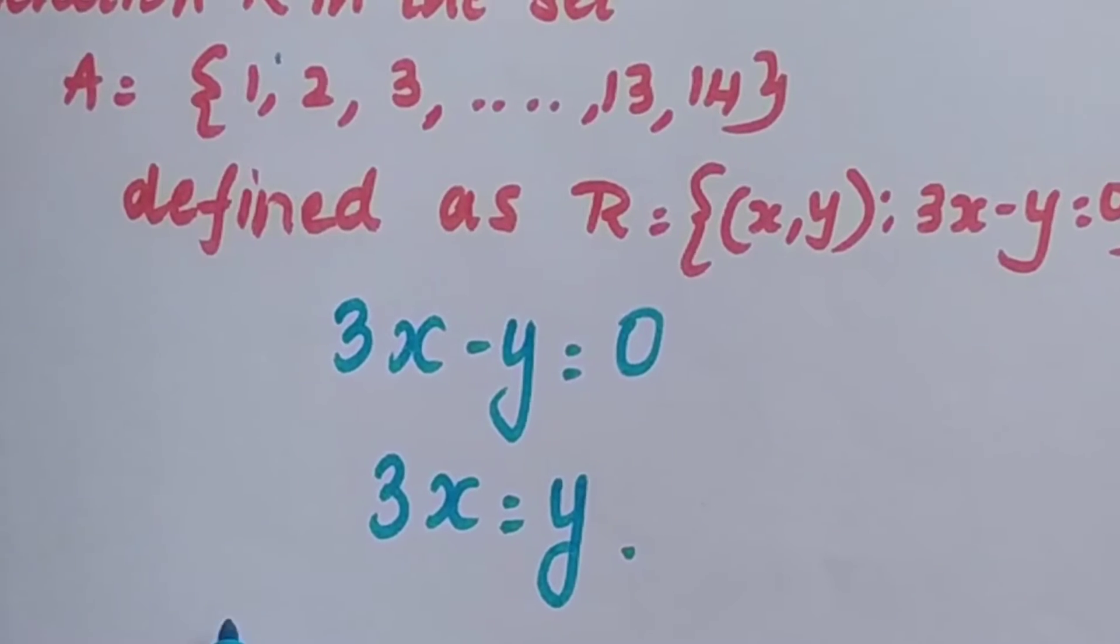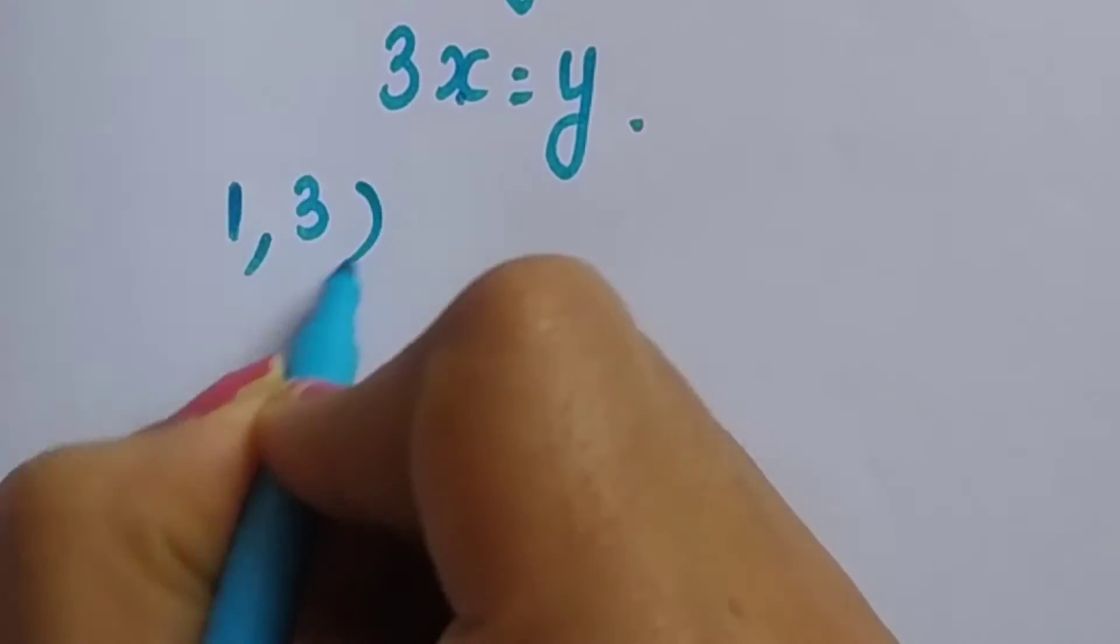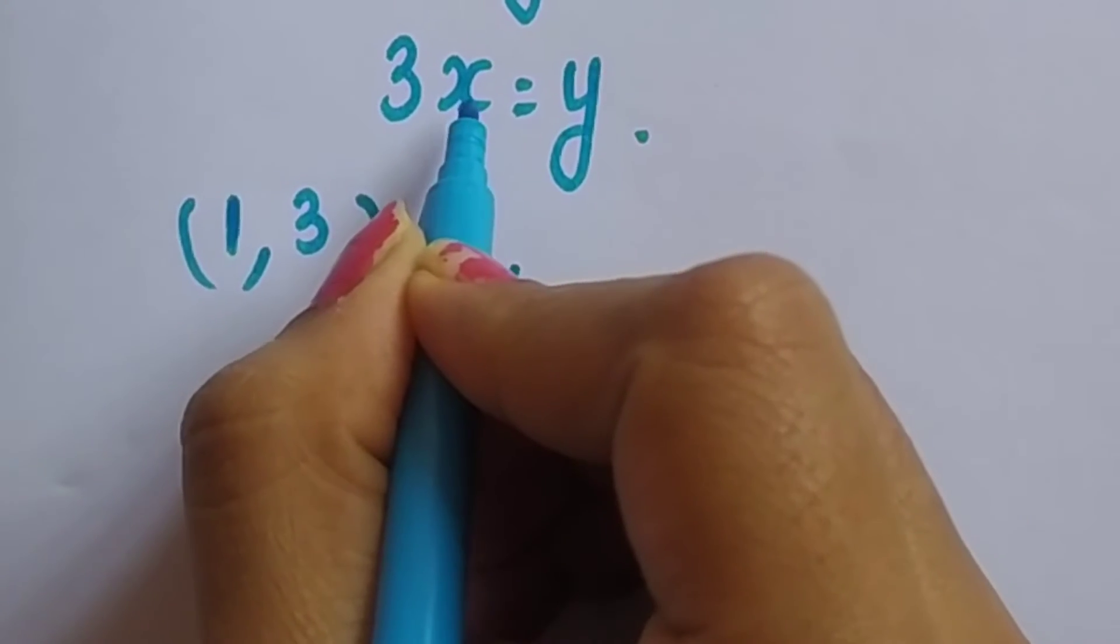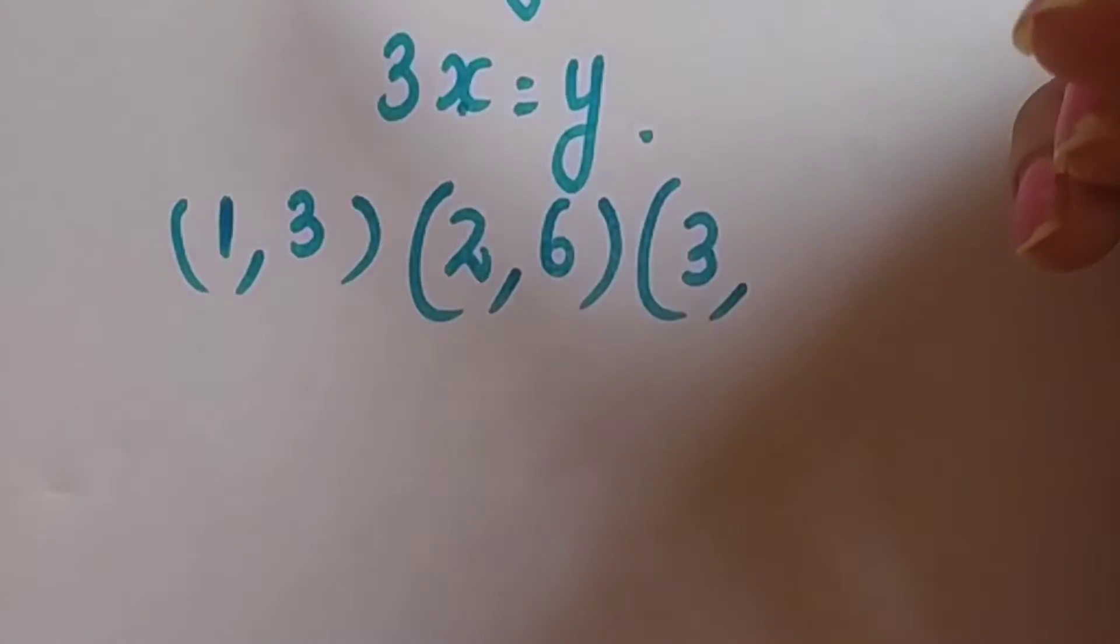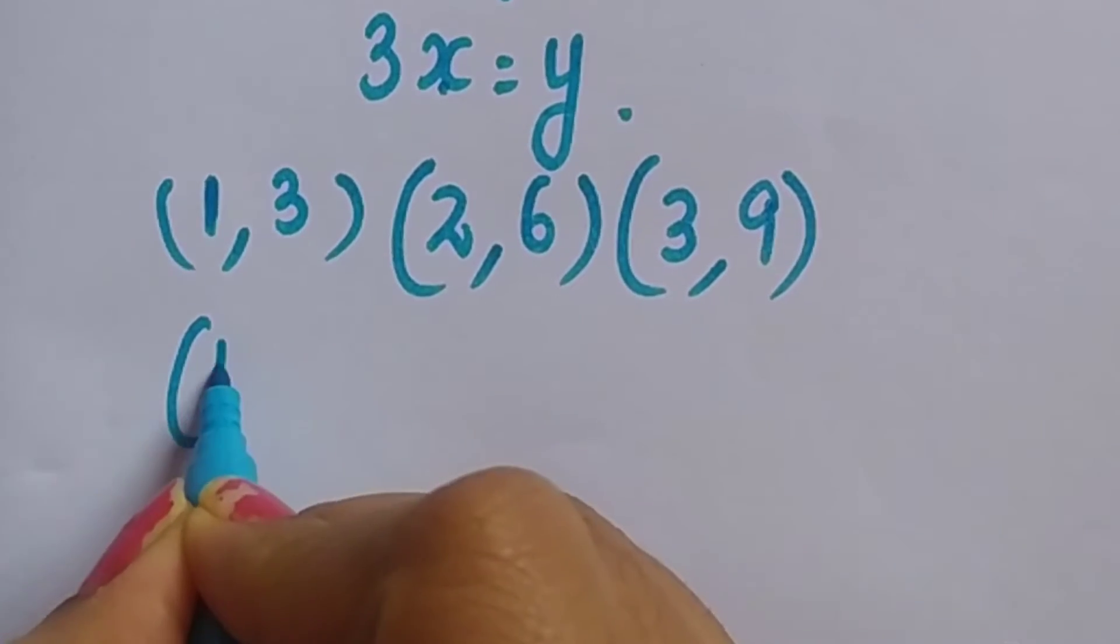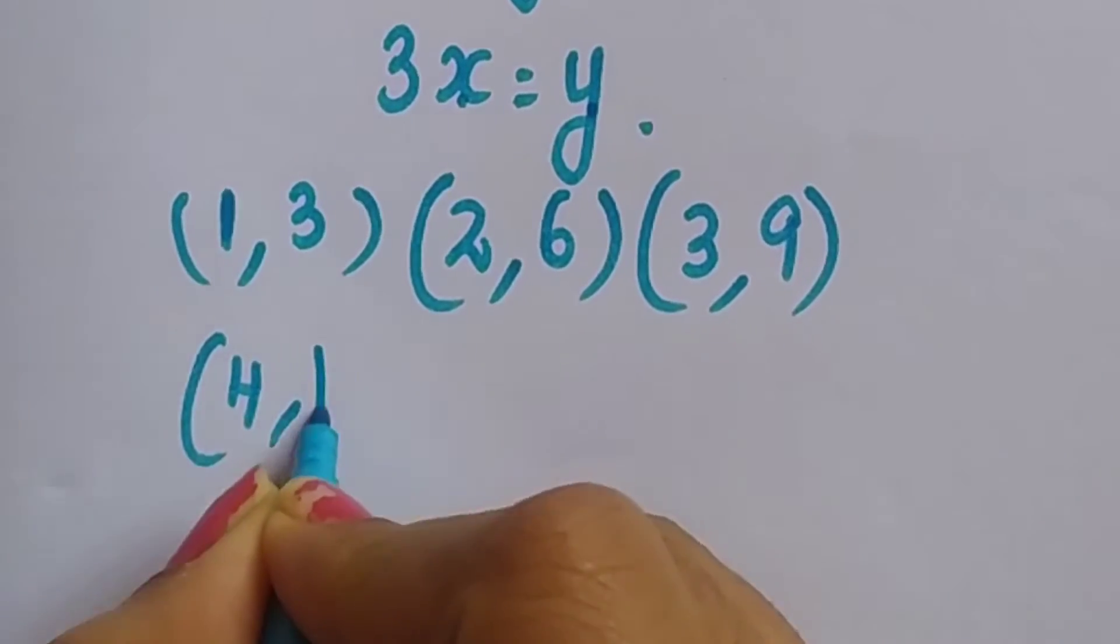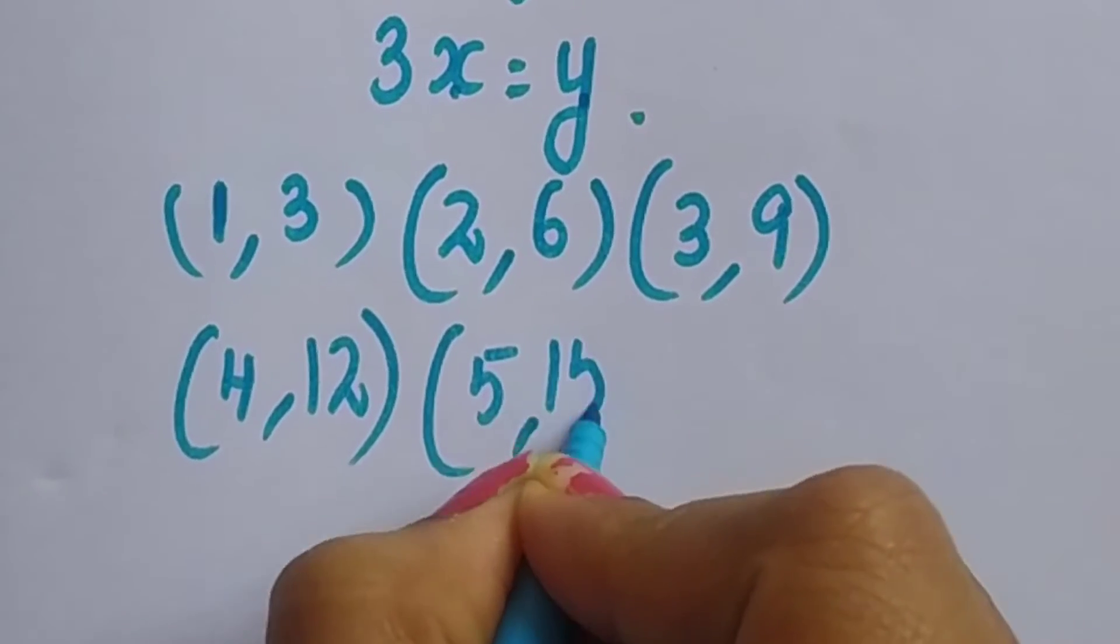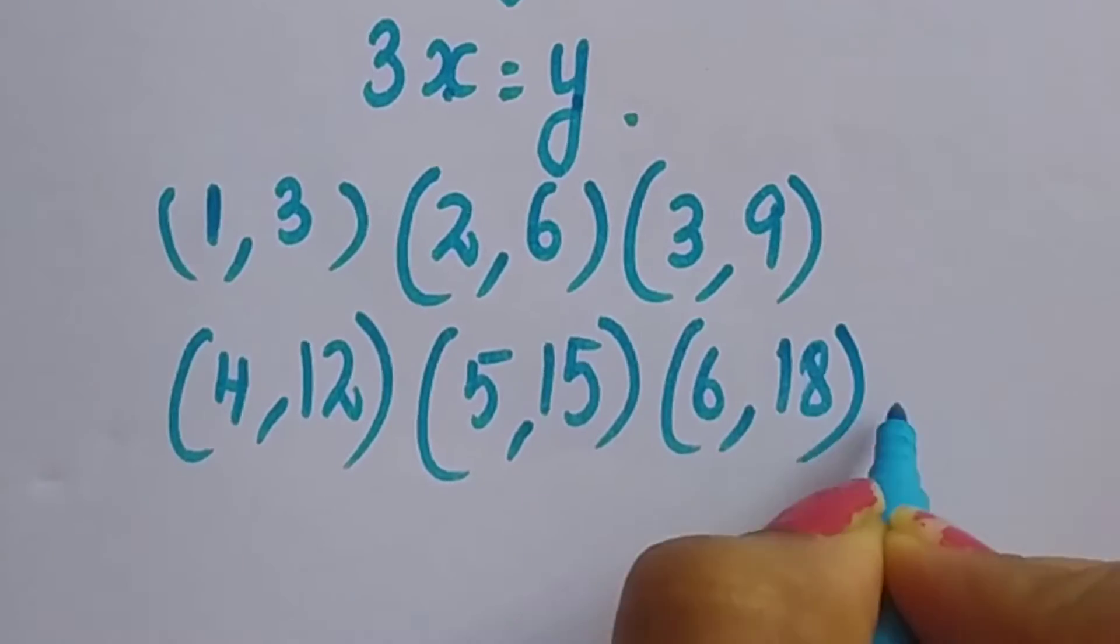So if I put 1, then this will be 3. Then if I put 2, it will be 6. And if I put 3, 3x is 9. So next element is 4, if I put 4, it is 12. Now if I put 5, it will be 15. If I put 6, it will be 18 and so on.